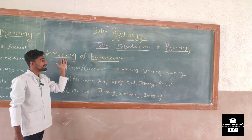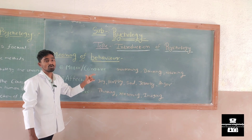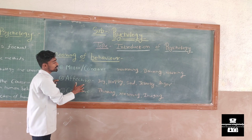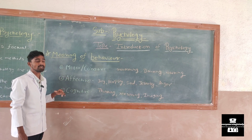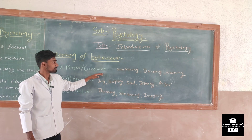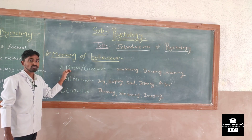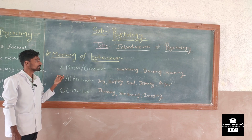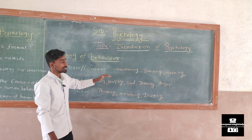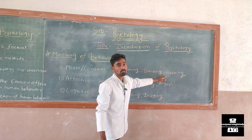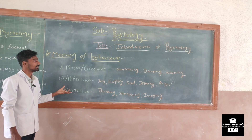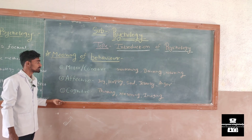The next topic is the meaning of behavior. Behavior includes three aspects. The first aspect is the motor or cognitive manner. In the motor aspect, it includes all those activities in which our muscles and joints are involved, like swimming, dancing, and walking — all activities performed with the help of muscles and joints.